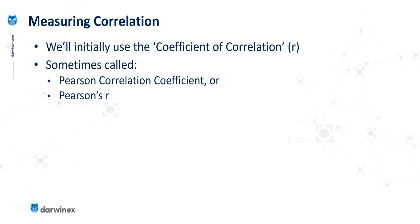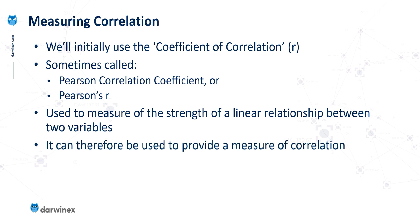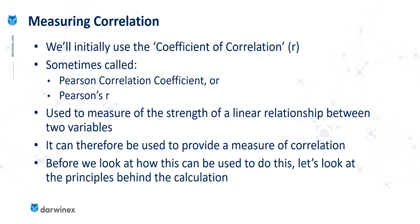The first of these is the coefficient of correlation. This is sometimes called the Pearson correlation coefficient, or simply Pearson's R. In general statistical terms, this is used to measure the strength of a linear relationship between two variables, and it therefore provides a measure of correlation between those variables. Before we can start to look at how this is used, we need to look at some of the principles behind the calculation.